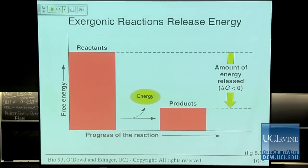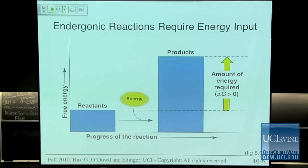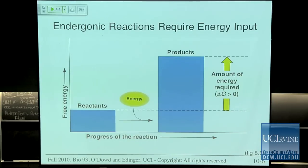Here is our general exergonic reaction, defined as a reaction that releases energy. On the y-axis we have free energy, and the x-axis is the progress of the reaction. In an exergonic reaction, the reactants have higher free energy than the products, so energy is released — delta G is less than zero. The opposite is an endergonic reaction, which requires energy input to go forward. The reactants start at low free energy compared to the products, so delta G is a positive value.